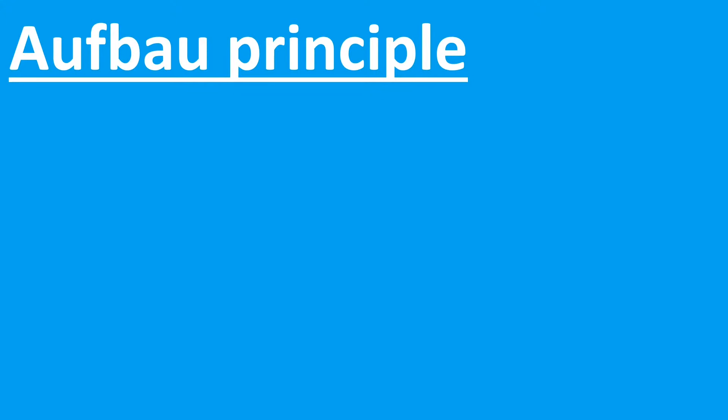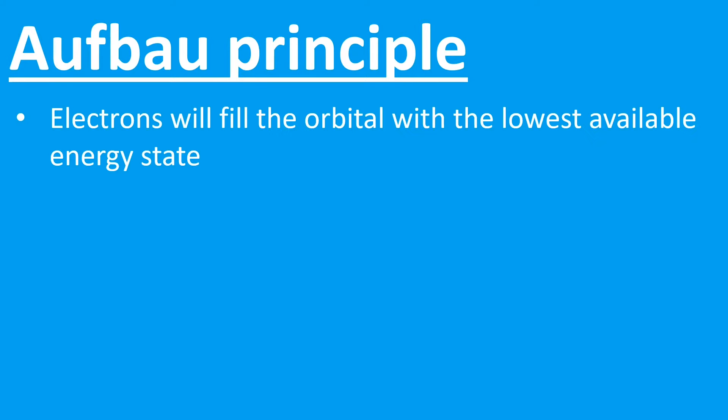So what is the Aufbau principle? Well, you've already been applying this at GCSE. The Aufbau principle is that electrons will fill the orbital with the lowest energy state, or at GCSE that was the inner shells first, the shells closest to the nucleus, and that gives the most stable electron configuration.